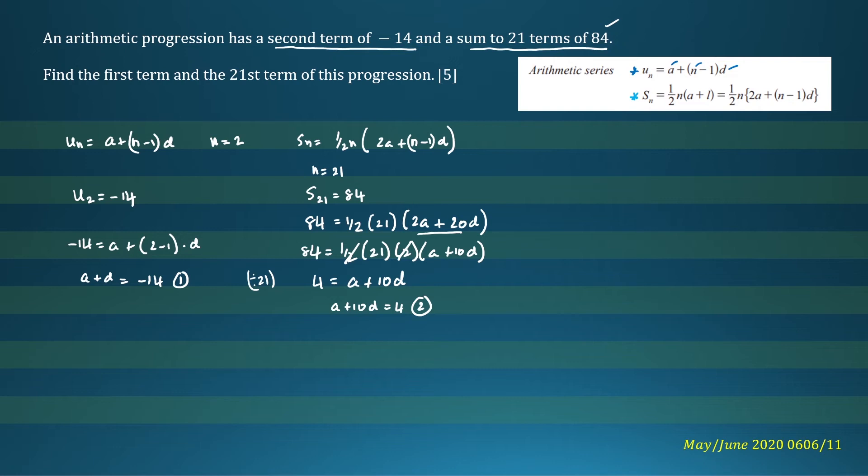Now we can solve for a and d. Let's write them again. We'll have a plus d equals negative 14, equation 1. a plus 10d equals 4, that's equation 2. Let's subtract the equations. Let's subtract equation 1 from equation 2. So a minus a is 0, 10d minus d is 9d, 4 minus negative 14 is 18. So d will be equal to 2.